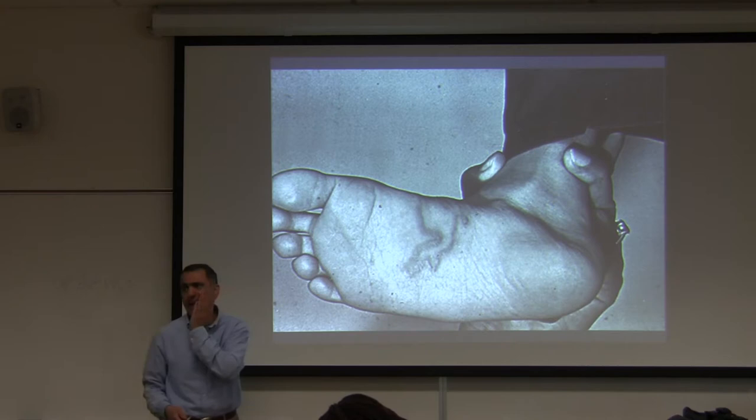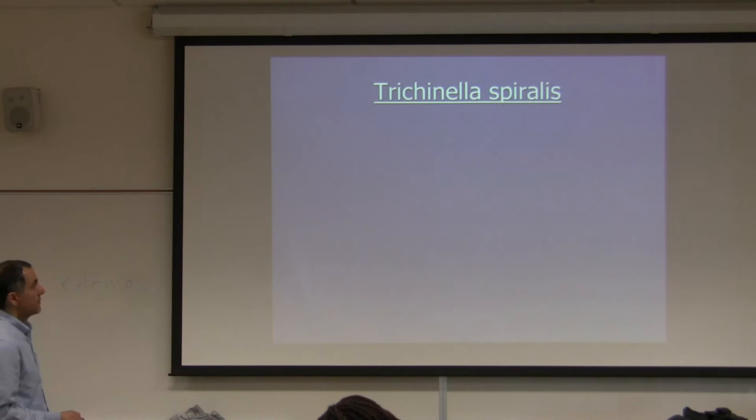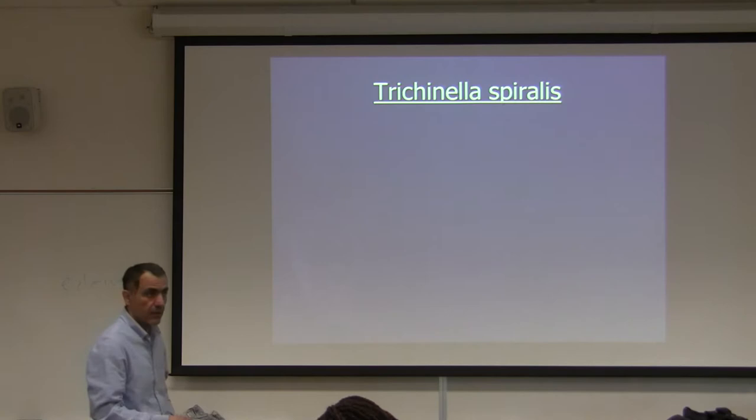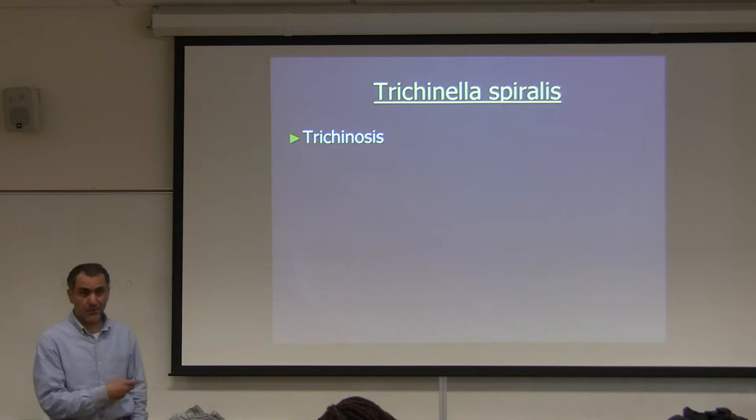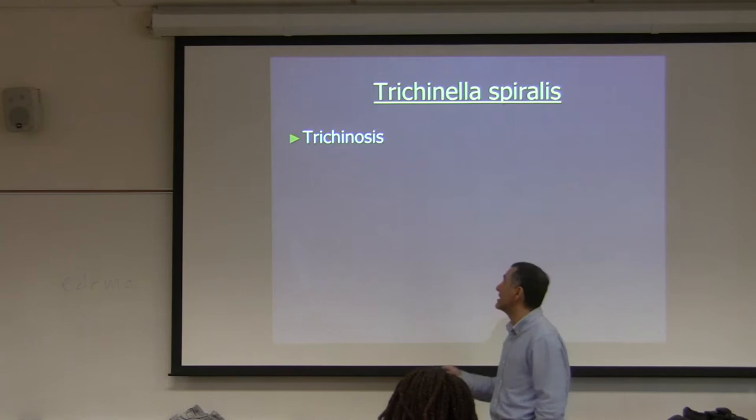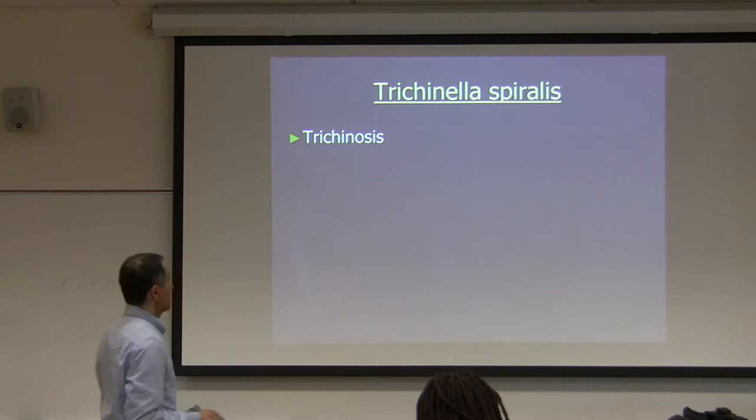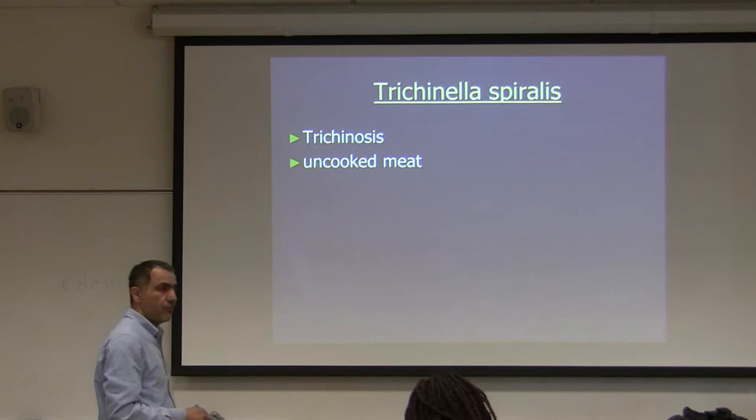The next organism is Trichinella spiralis. We discussed them but didn't have a full lecture. There are several species. Trichinosis is the name of the disease caused by the organism Trichinella spiralis.